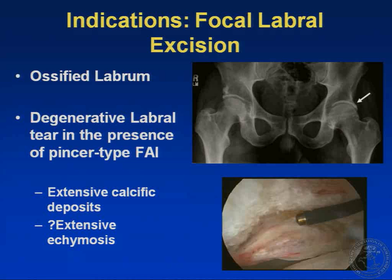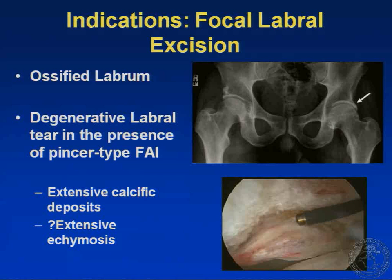The next two videos: the first shows a labrum with intralabral calcification in a patient with pincer-type impingement. We initially attempted a labral takedown but found extensive calcification, so we subsequently debrided it. The second case shows an anterior acetabular rim ossification — in cases where the labrum is ossified, you need to do a rim resection including the labrum, because there is usually not much labrum left to take down.